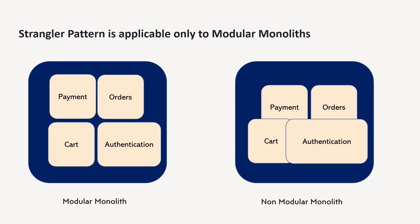On the other hand, I have seen many applications where the code is not very separate. For example, in Java, you might have classes with objects from both payment and cart mixed together. In that case, the monolithic is not modular and it is difficult to define the boundaries of the functionality. If you have a monolithic that is not modular, it's going to be difficult, because you need to make sure that whenever the monolithic and microservices are running together, they work together. We have to be very thoughtful about applying this pattern.